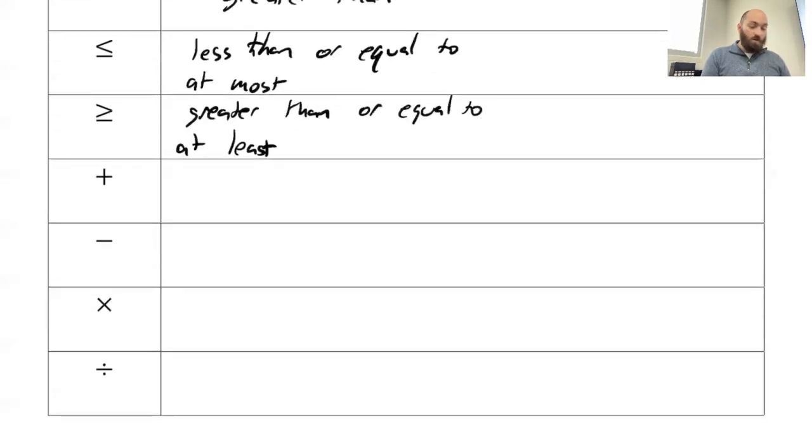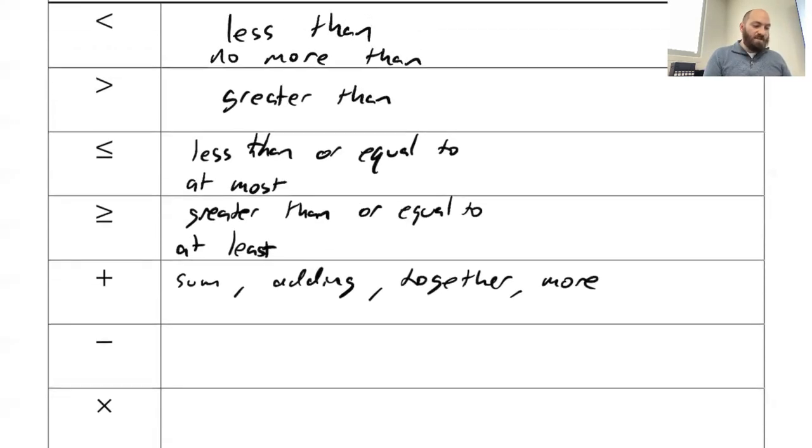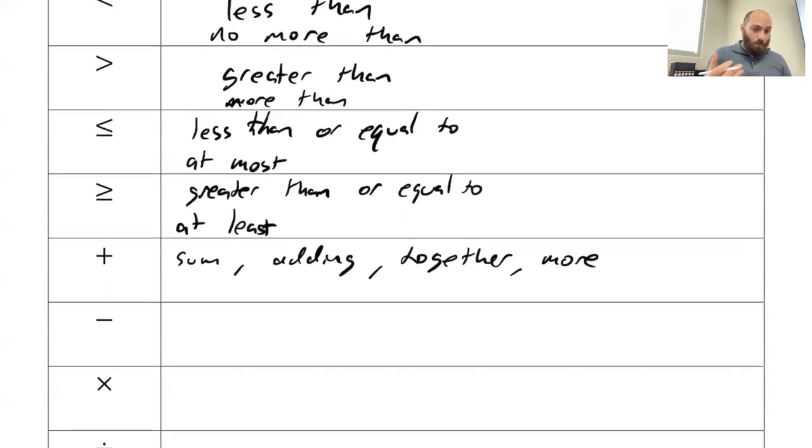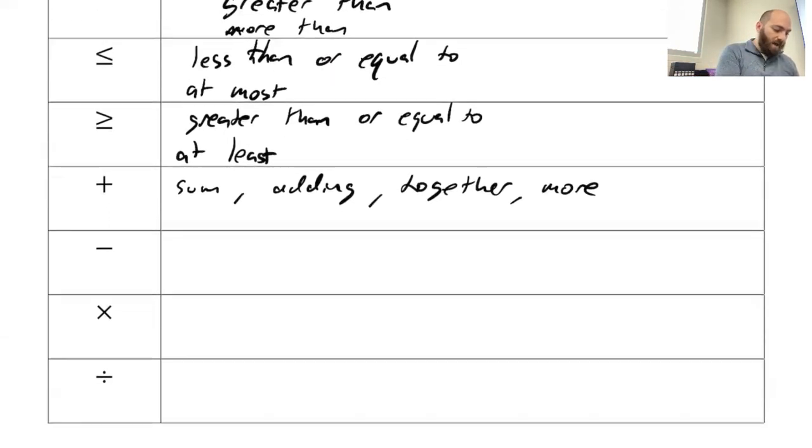Some of our other ones, make sure we understand these terms. You got addition, so you got sum, adding, together. More comes up, but be careful because I might say more, greater than or more than. But there's a difference between more than and just more. So we have difference for subtraction, we got subtracting.